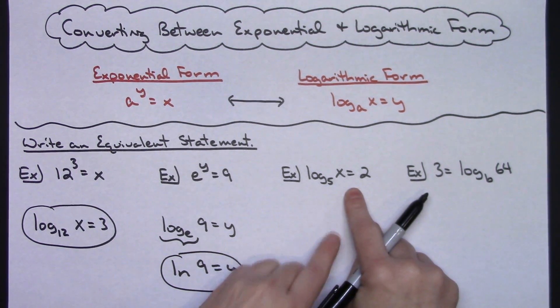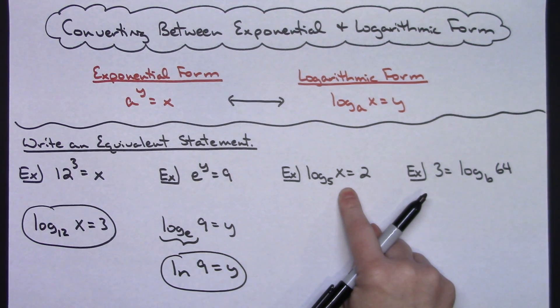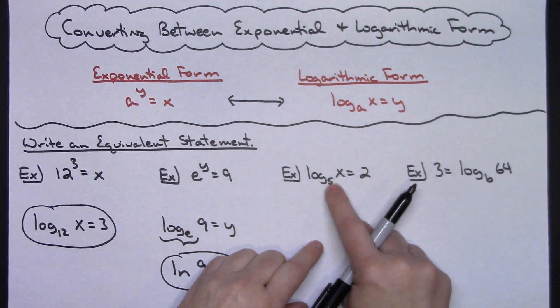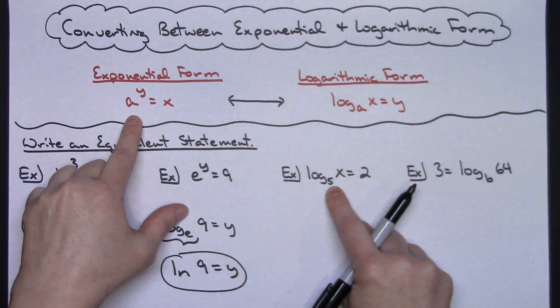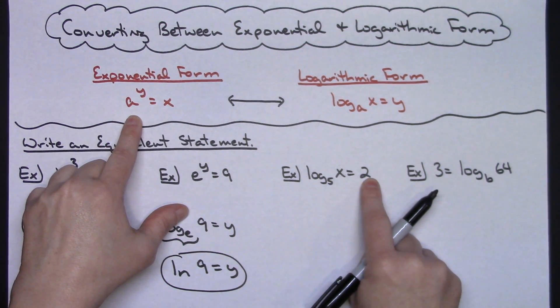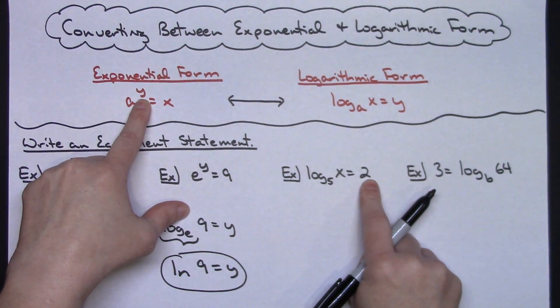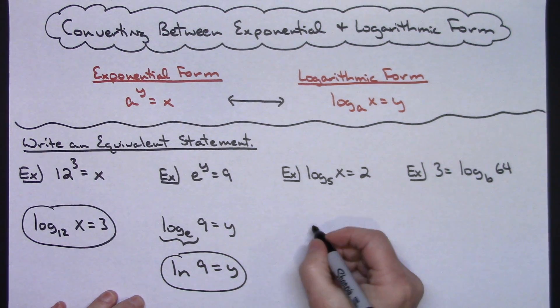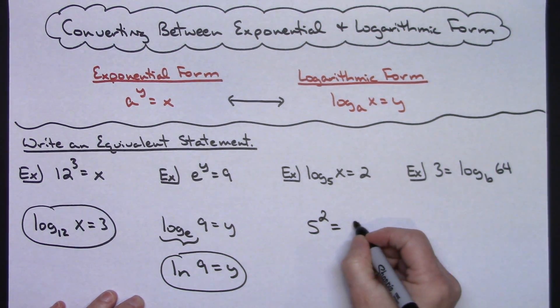In this example right here, I have the logarithmic form to start with. So that means I want to go to the exponential form. I know that because I've got the log in here. The base on the logarithm has to be the base of my exponential form. My exponent then would be whatever it's set equal to and then equals whatever I'm taking the log of. So written in exponential form here, I would have 5 raised to the second equals x.